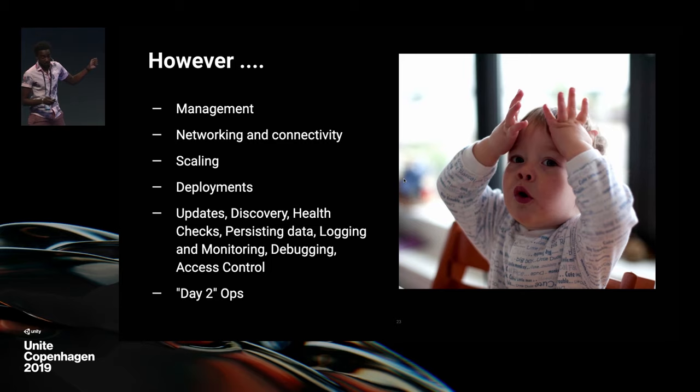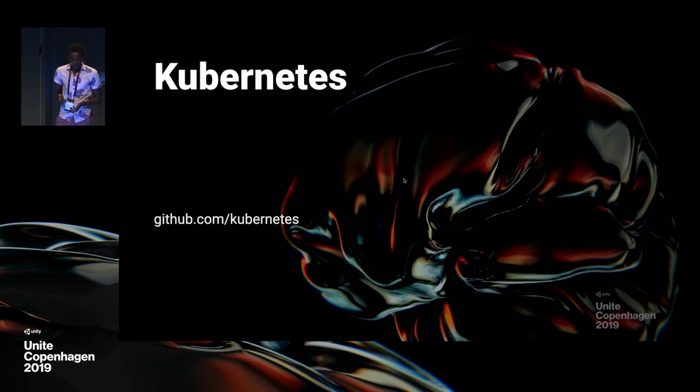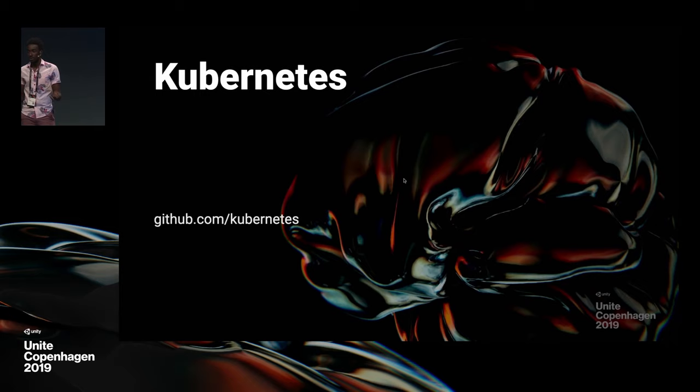The challenge with containers is that at scale, it introduces a lot of problems — you have to deal with management, networking and security, and day-two ops like high availability. As the number of containers we were deploying grew, we knew we needed a better way to orchestrate this and get visibility into our systems. That's when we created Kubernetes — meant to solve this problem internally, but we ultimately open sourced it and exported it to the community so anyone can contribute.